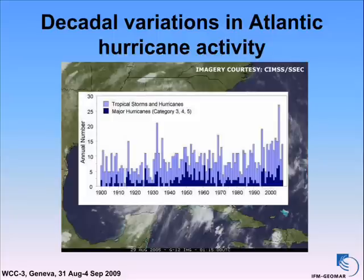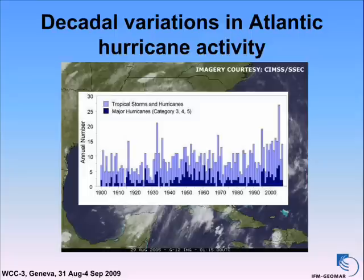The second example is hurricane activity. Here is a short movie of Hurricane Katrina. Hurricanes became very prominent since 2005, which was the record year — we never had an instrumental record year with more hurricanes. However, if you look at the record, you see the number of tropical storms plus hurricanes, or only the major hurricanes in dark blue, and there is a lot of variability. If you remove the year 2005, it is hard to see any significant long-term trend. The record is basically dominated by interannual and especially decadal variability.